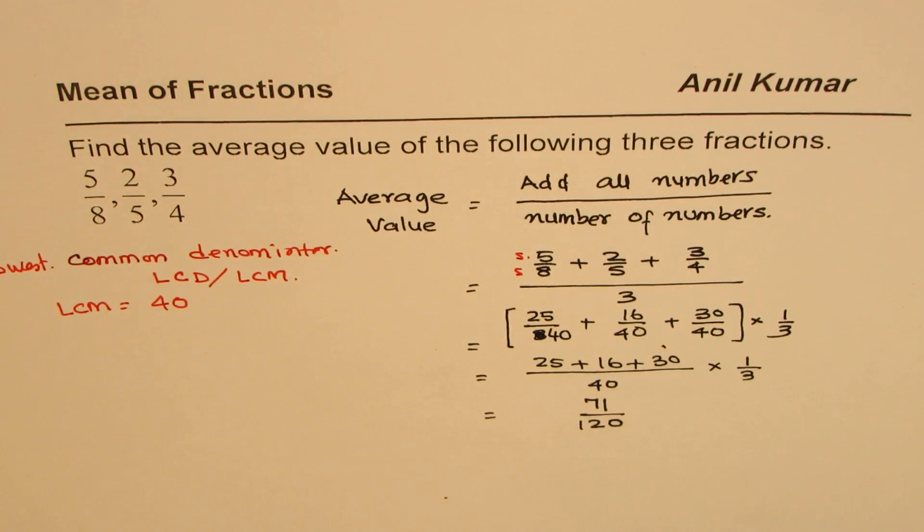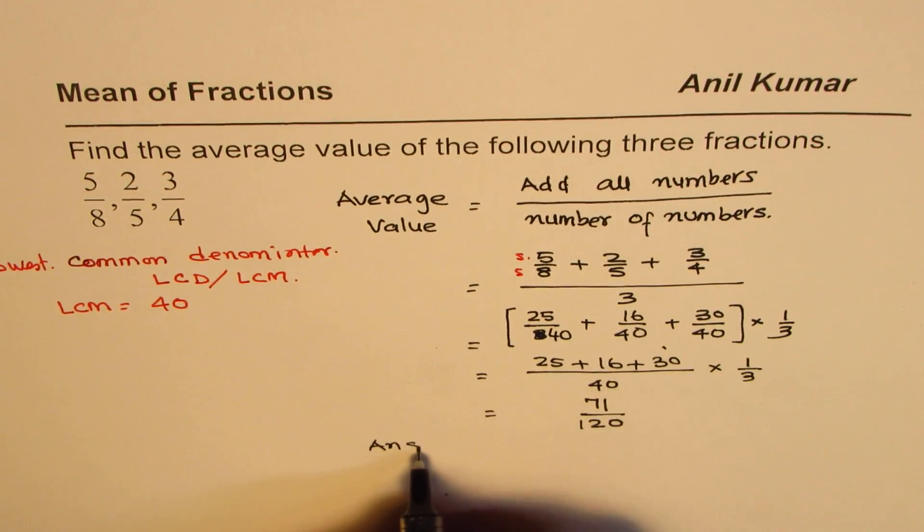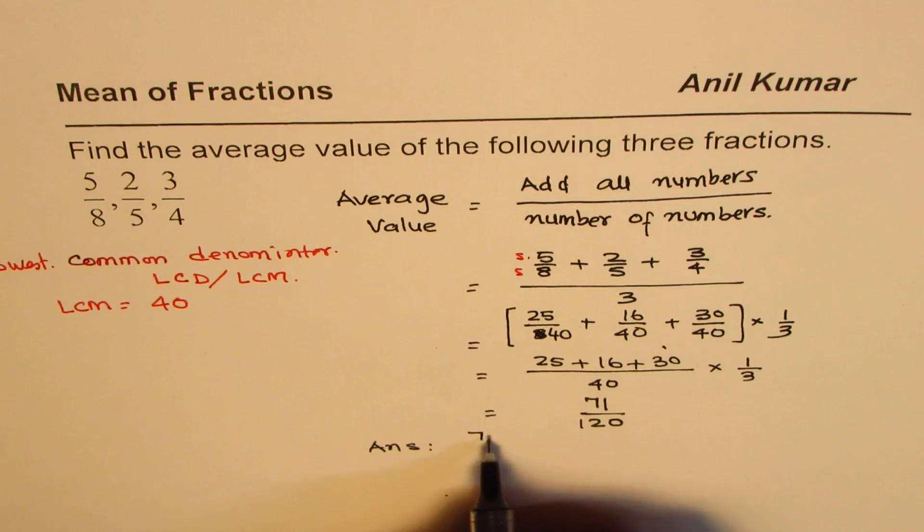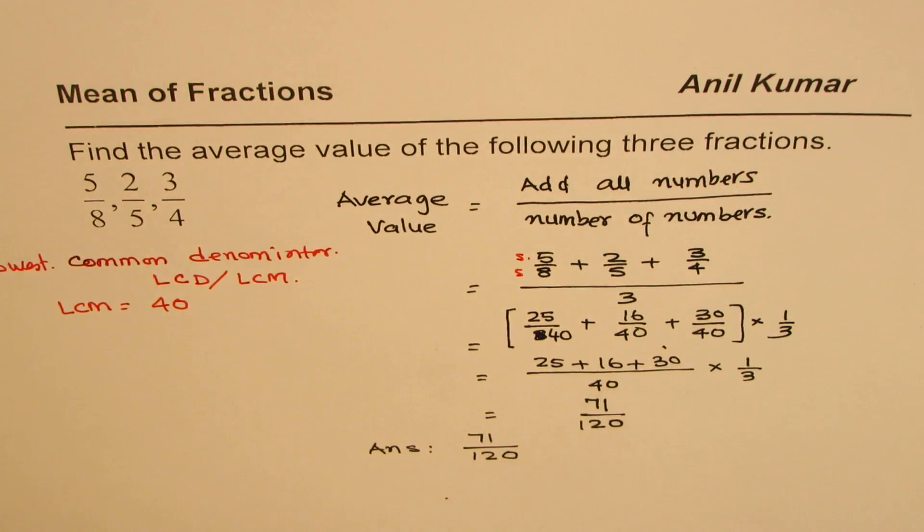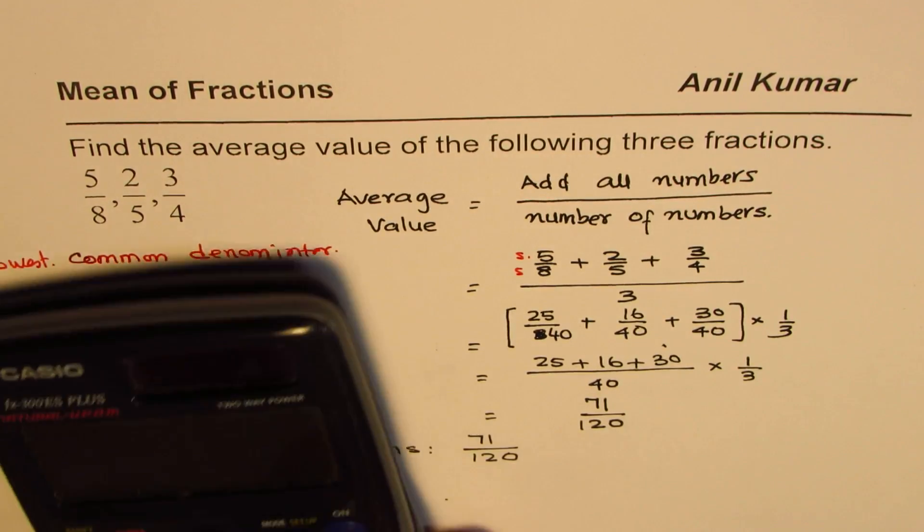So that is the average value of all these numbers. So we can write down our answer as average is 71 over 120.